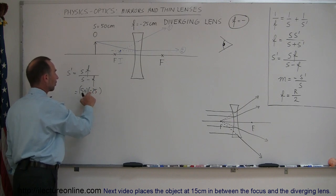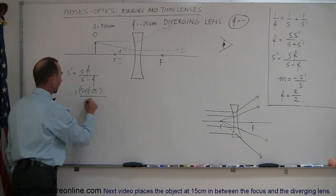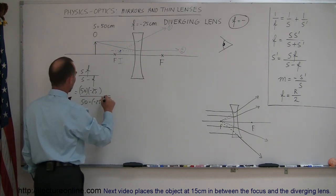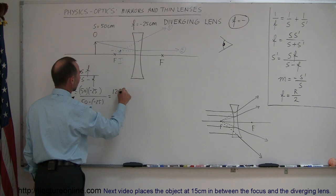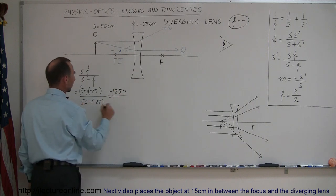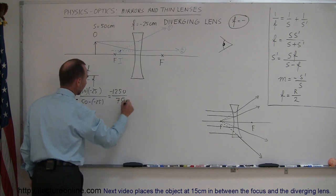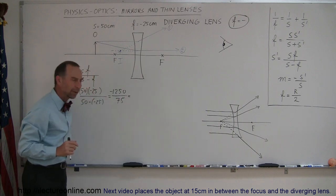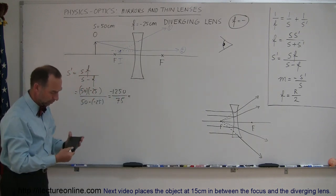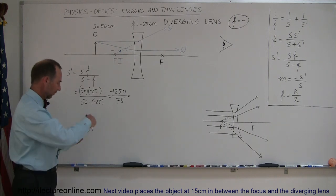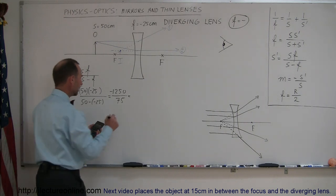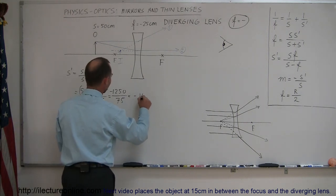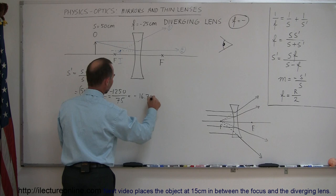S is 50 centimeters and F is minus 25 centimeters. Remember, for a diverging lens, the focal length is negative, divided by 50 minus a minus 25. This will give us 1250, that would be negative 1250, divided by 50 minus minus 25, which would be positive 75. Let me grab my calculator. We have negative 1250 divided by 75, and yes indeed, that would be minus 16.7 centimeters.